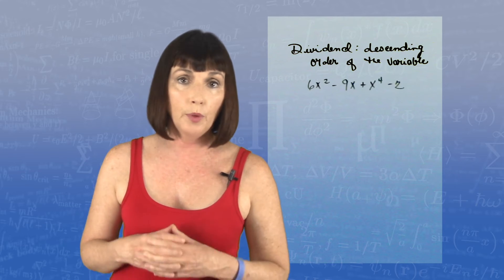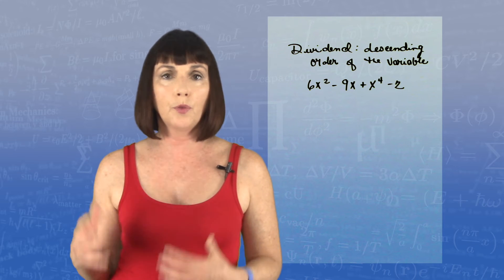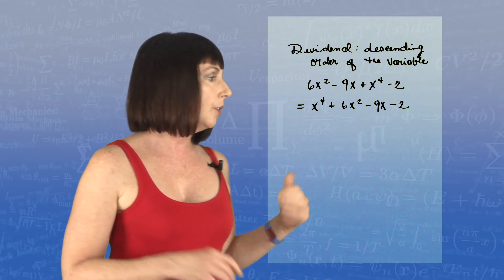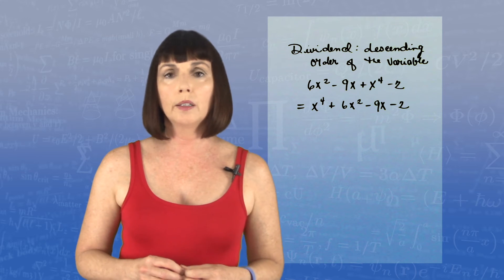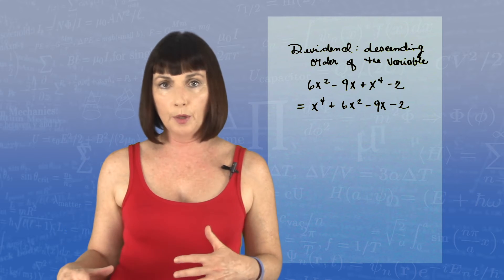So for example, if we had 6x squared minus 9x plus x to the fourth minus 2, we would rewrite that as x to the fourth plus 6x squared minus 9x minus 2 in descending degrees of the variable.